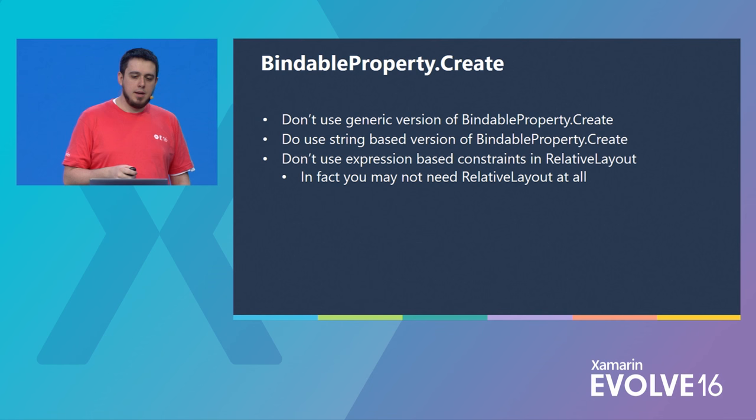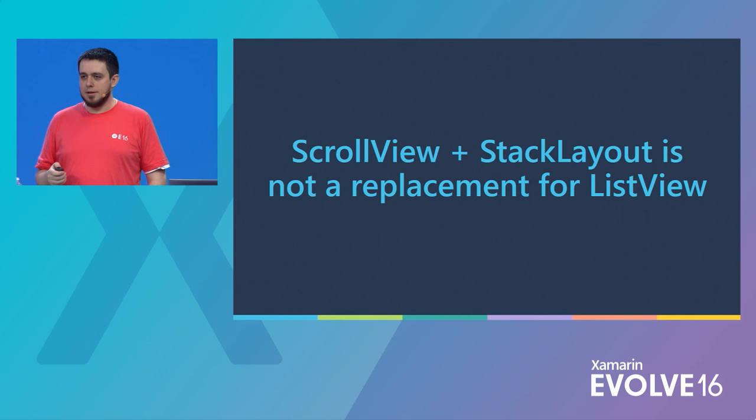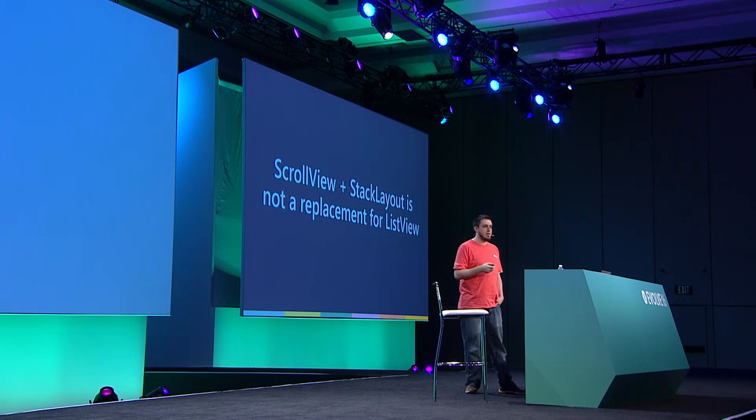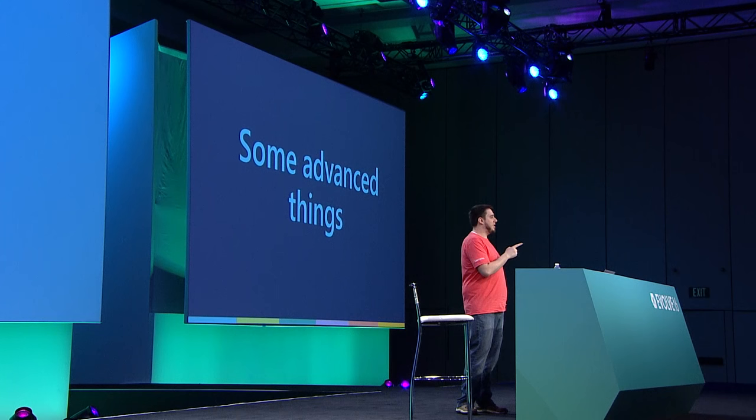Scroll view and stack layout are not a list view — they're not even close to the same thing. There's no virtualization when you do this, and there are huge performance implications. So please stop. I've seen thousands of apps and most of them don't do these things — most of them are fantastic. You guys are so great at using our APIs.